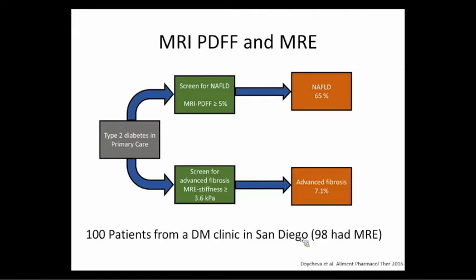A nice study in San Diego went to a diabetes clinic, pulled the first 100 patients who came in with diabetes, offered them an MRE, and 98 agreed. Using a fat fraction greater than 5%, 65% of those patients had fatty liver. Using the cutoff equivalent to F3/F4 fibrosis (multiplied by 2.5, so 10 kPa in FibroScan terms), 7.1% — seven of the 98 — had advanced fibrosis. None of them knew they had liver disease at all. The liver doesn't tell you what's going on until you're frankly cirrhotic with ascites, hepatic encephalopathy, or GI bleeds. The most common symptom is fatigue, and who isn't fatigued at some point — it's really hard to quantify.